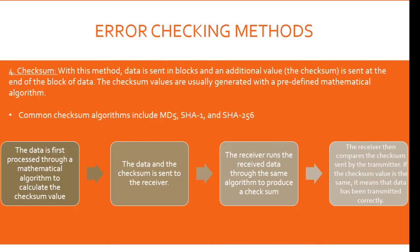Number four, checksum. With this method, data is sent in blocks and an additional value — the checksum — is sent at the end of the block of data. Checksum values are usually generated with a predefined mathematical algorithm. Common checksum algorithms include MD5, SHA1, and SHA256. First, the data is processed through a mathematical algorithm to calculate the checksum value. Then, the data and the checksum are sent to the receiver. The receiver runs the received data through the same algorithm to produce a checksum. Finally, the receiver compares the checksum sent by the transmitter — if the values are the same, data has been transmitted correctly.